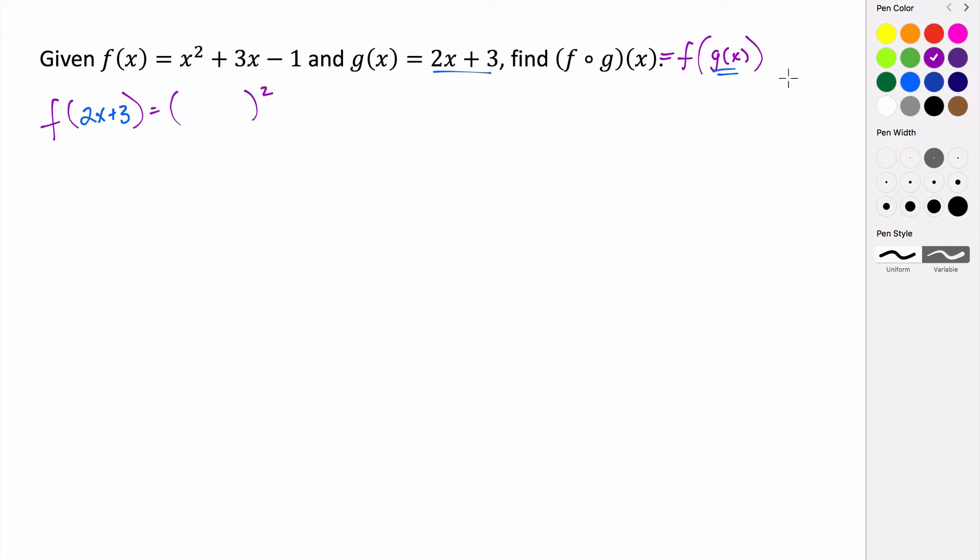So we have 2x plus 3 here, being squared, plus 3 times 2x plus 3. And then all of this minus 1.